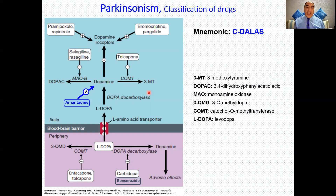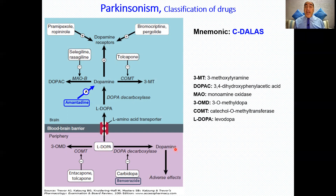The second letter, D, stands for dopamine — but can we use dopamine itself? No, because dopamine cannot pass through the blood-brain barrier. So we use its immediate precursor, L-DOPA, which is structurally similar to tyrosine with just one extra hydroxyl group. L-DOPA can use the L-amino acid transporter to pass through the blood-brain barrier, where it is converted by DOPA decarboxylase into dopamine inside the substantia nigra to activate dopaminergic receptors. However, L-DOPA can also be converted into dopamine peripherally, causing side effects. To prevent this, we use peripheral DOPA decarboxylase inhibitors such as carbidopa and benserazide.